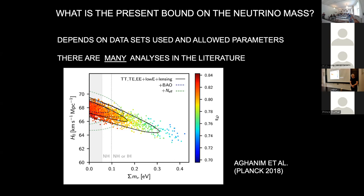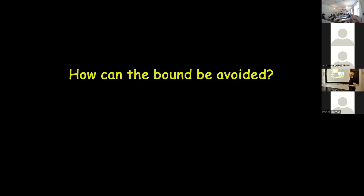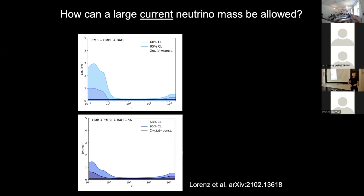Regarding mass-varying neutrinos: the plot showing redshift and maximum allowed mass is not from the model-building side — it's from the agnostic data side, asking what does cosmology actually tell us about neutrino masses at a given redshift. It's a useful exercise because it emphasizes where we actually get our information from, and how a model builder could hide something if needed.